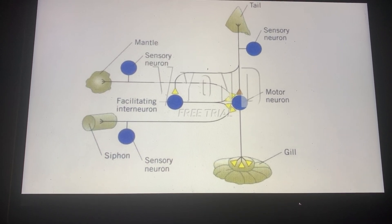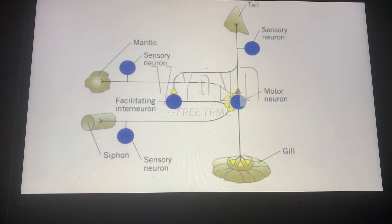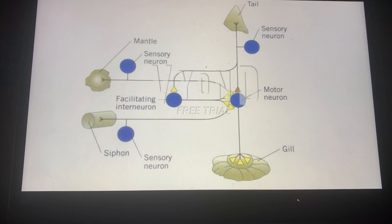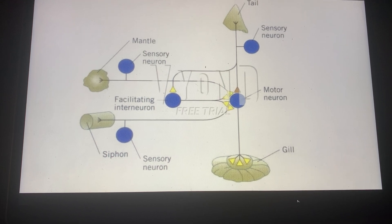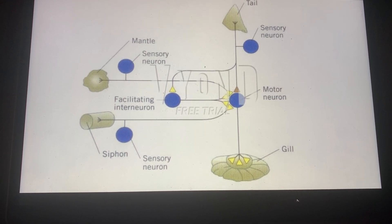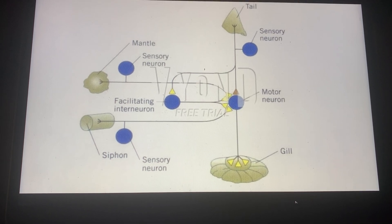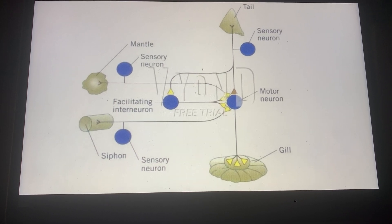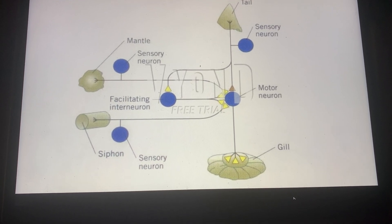It's very interesting to see that with sensitization, the response is generalized, but associative learning is specific as you need these two actions to occur. This shows how associative learning can be learned in an animal such as Aplysia. Thank you.